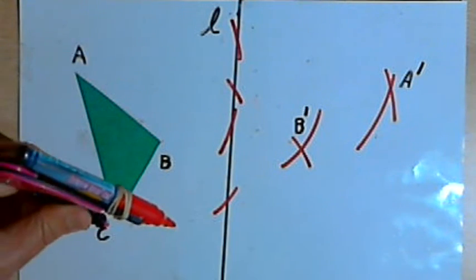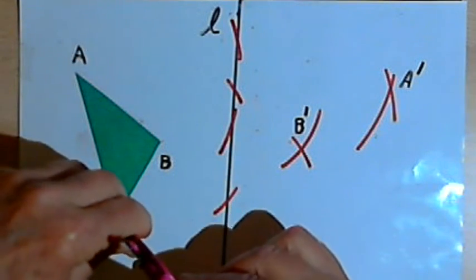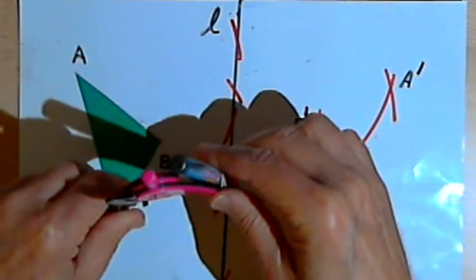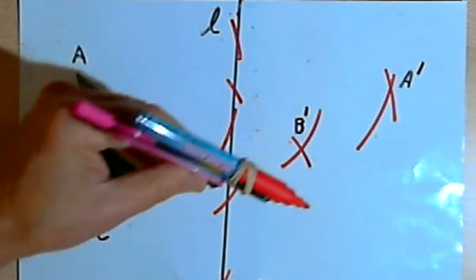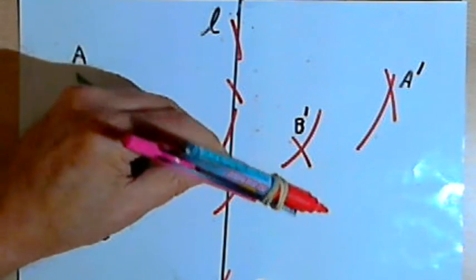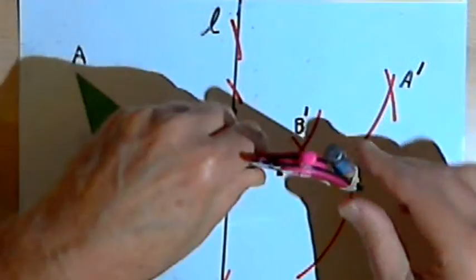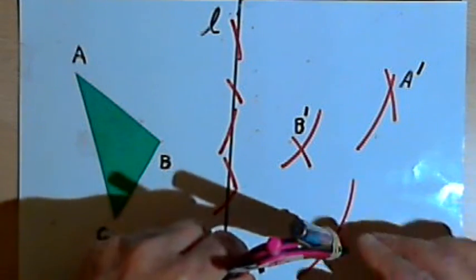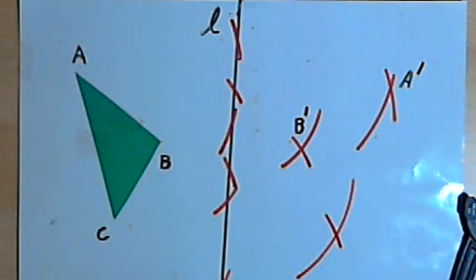And I've got to do this one more time for point C. Draw the two arcs. From those arcs draw two more arcs that intersect. And where they intersect is C prime.